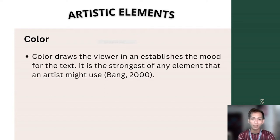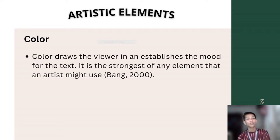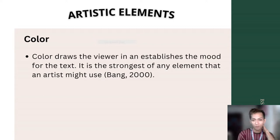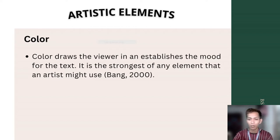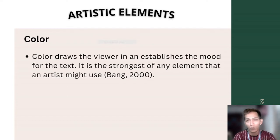Part of the artistic elements is color. When we say color, there are lots of representations of colors. According to Bang in 2000, color draws the viewer and establishes the mood for the text. It is the strongest of any element that artists might use. Using a brilliant color always represents something or reflects the reader, and it is also the way to catch the attention of your readers.